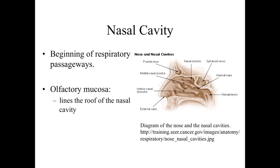The conducting portion of the respiratory system proper is going to start out with the nasal cavity — that's the beginning of the respiratory passageway. What we're going to see is an opening to the respiratory tract lined by an olfactory mucosa, which lines the roof of the nasal cavity. This is going to be a little different than the respiratory lining over most of the rest of the respiratory tract.